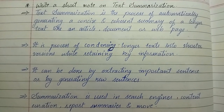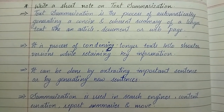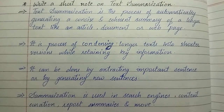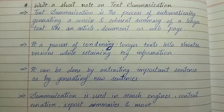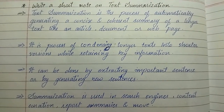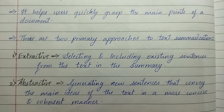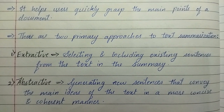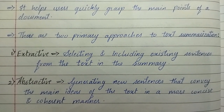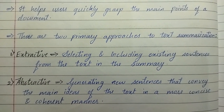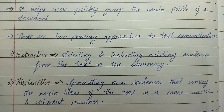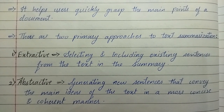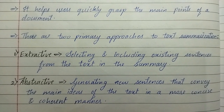Text summarization retains key information and can be done by extracting important sentences or by generating new sentences. Summarization is used in search engines, content curation, report summaries, and more. It helps users quickly grasp the main points of a document. There are two primary approaches: first is extractive — selecting and including existing sentences from the text in the summary — and second is abstractive — generating new sentences that convey the main ideas in a more concise and coherent manner.